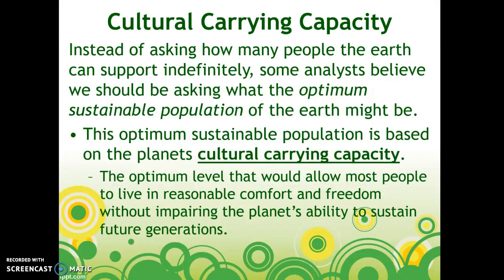So instead of asking how many people the Earth can support indefinitely, some analysts believe we should talk about the optimum sustainable population the Earth might have. The optimal sustainable population is based on the planet's cultural carrying capacity — which is what we discussed earlier this unit with Hardin's essay. Cultural carrying capacity is the optimum level that would allow most people to live in reasonable comfort and freedom without impairing the planet's ability to sustain future generations.